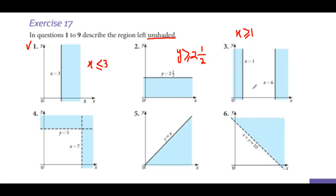Here, in the first line, x is equal to 1. The unshaded region is on the right hand side, and on the right hand side the values of x are greater than 1, so the inequality will be x is greater than equal to 1. Here the unshaded region is on the left hand side, and on the left hand side the values of x are less than 6, so the inequality is x is less than equal to 6.